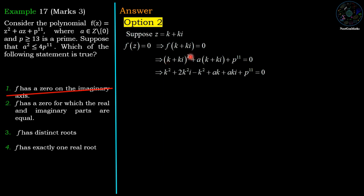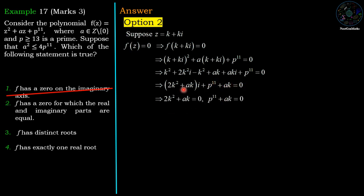Expanding: k² + 2k²i − k² + ak + aki + p¹¹ = 0. The k² terms cancel, leaving 2k²i + ak + aki + p¹¹ = 0. Gathering real and imaginary parts gives two equations: p¹¹ + ak = 0, and 2k² + ak = 0, so k(2k + a) = 0.